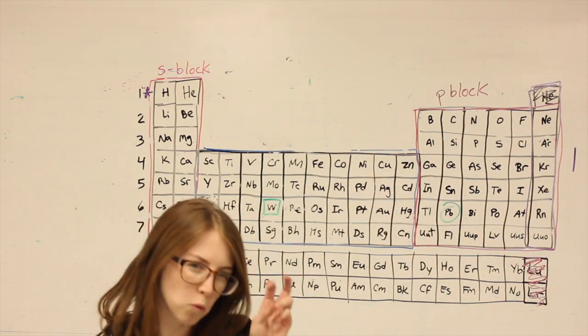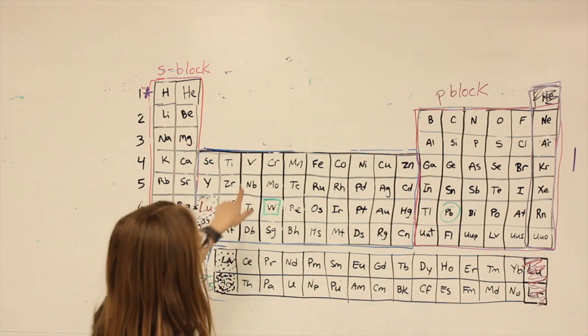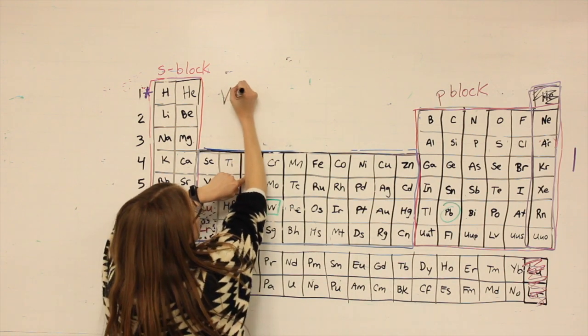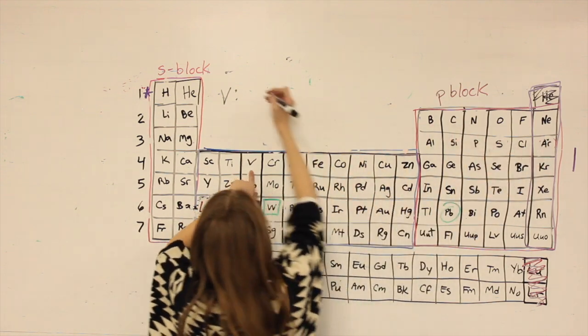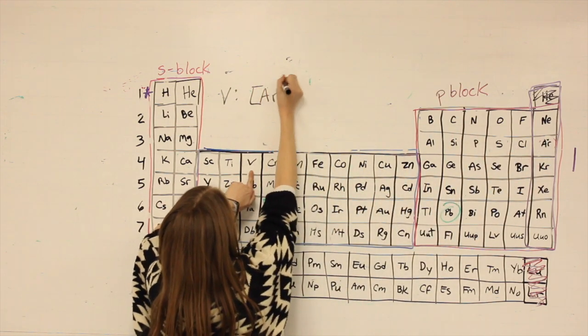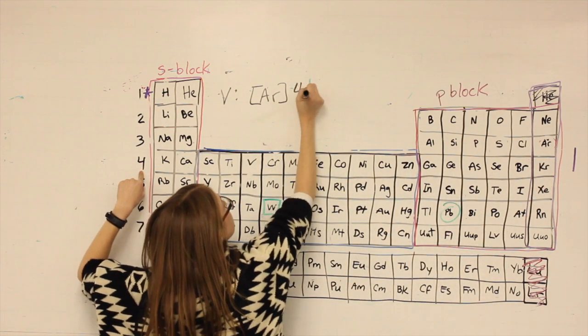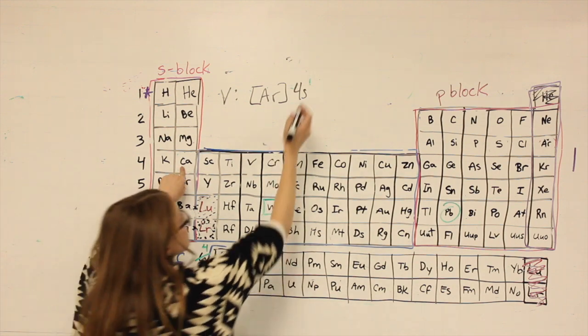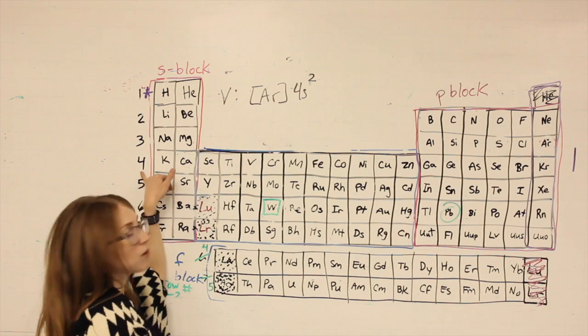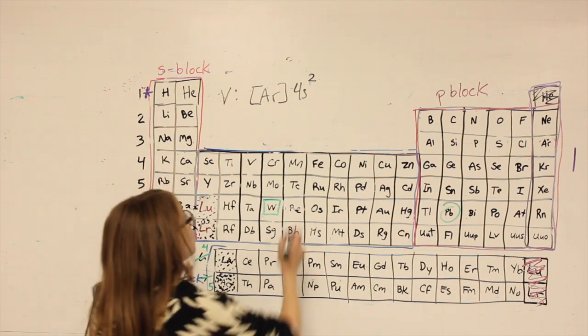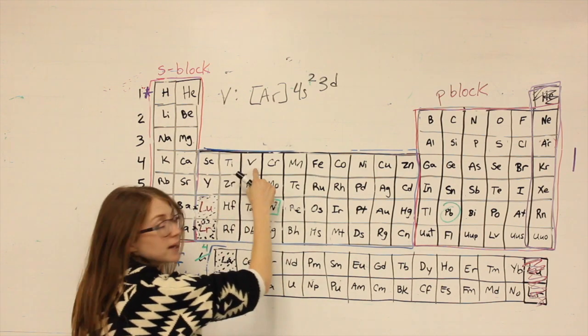A few more examples so you can watch me walk through the periodic table to write electron configurations. Let's do vanadium. I'm going to go ahead and use the shortcut, which means go to the noble gas before it, argon. After argon, 4s, one, two spaces. Now I'm about to enter the D-block, which means instead of writing a four, even though I'm in the fourth row, I'm going to write a 3d, one, two, three for vanadium.